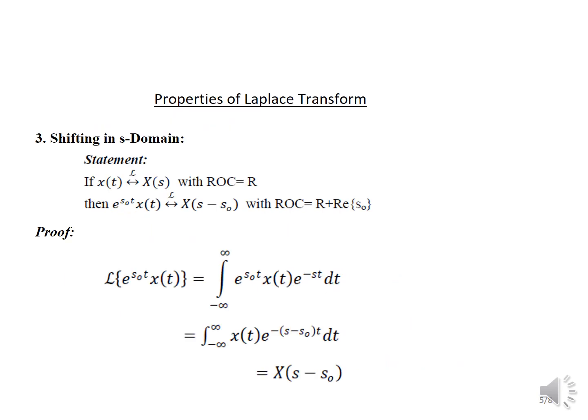Next property: shifting in the S-domain. Statement — if the Laplace transform of X(t) is X(s) with ROC equal to R, then the Laplace transform of e^(S₀t)·X(t) equals X(s − S₀) with ROC equal to R plus the real part of S₀. To prove this, we evaluate the integral from −∞ to ∞ of e^(S₀t)·X(t)·e^(−st) dt. Combining the S terms using the standard formula, we obtain X(s − S₀).